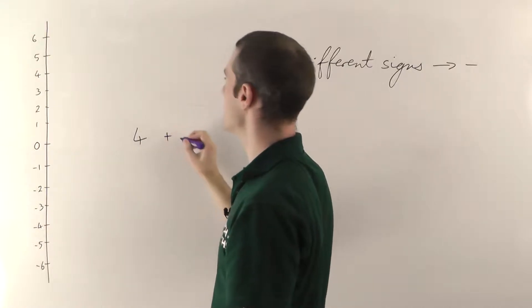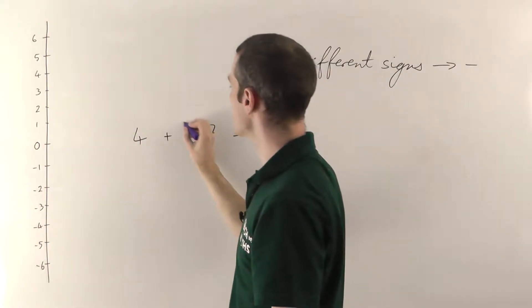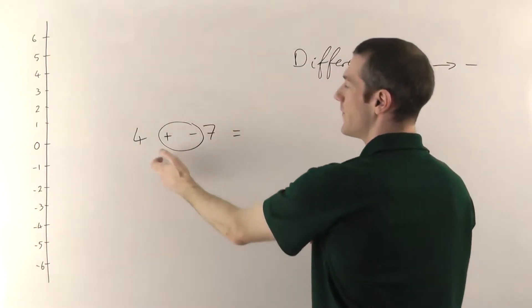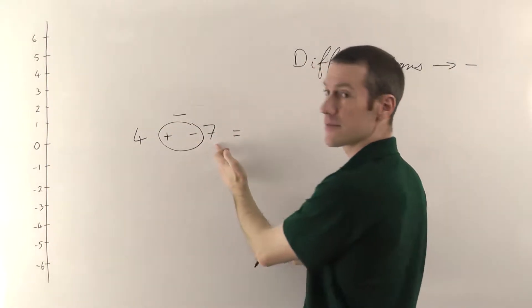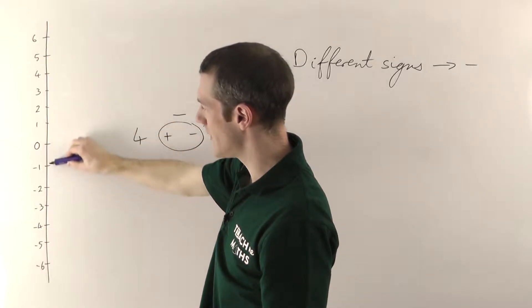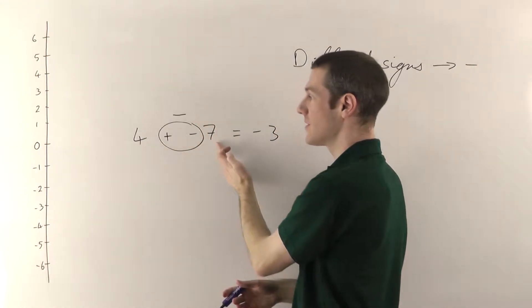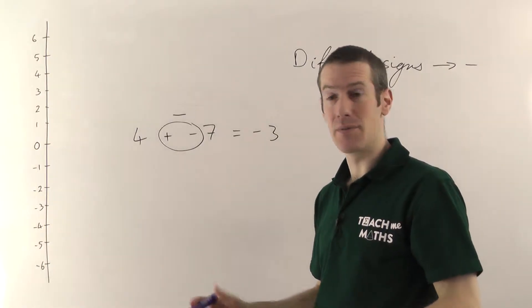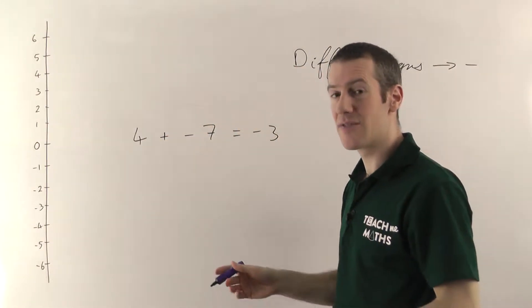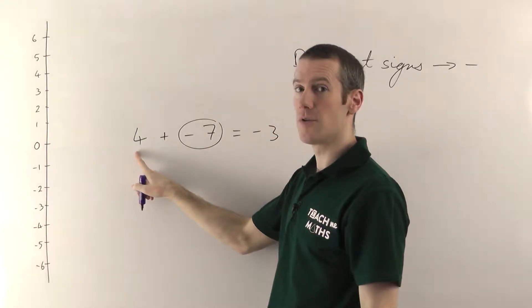Let me show you an example. We have four plus minus seven. The two signs — the plus and the minus — are different, so they're going to combine and become a minus sign. So four plus minus seven is the same thing as four minus seven. From four, go down: one, two, three, four, five, six, seven — that's minus three. So four plus minus seven equals minus three.